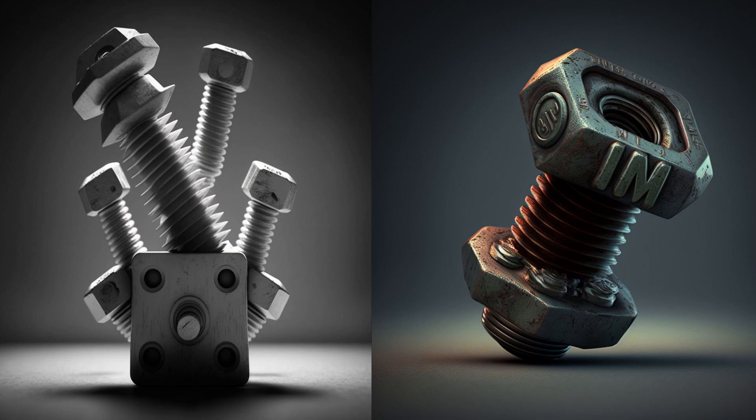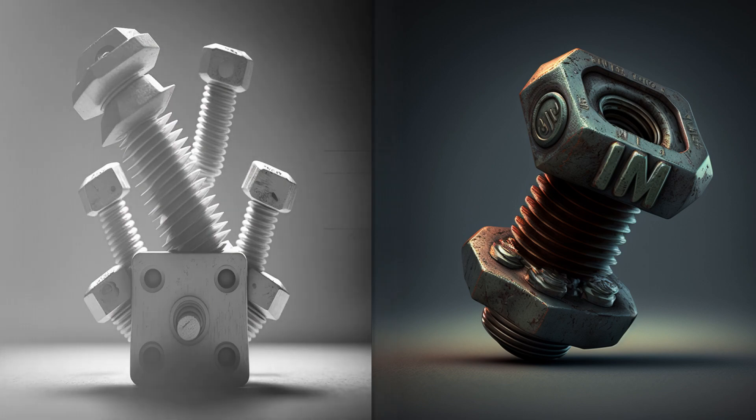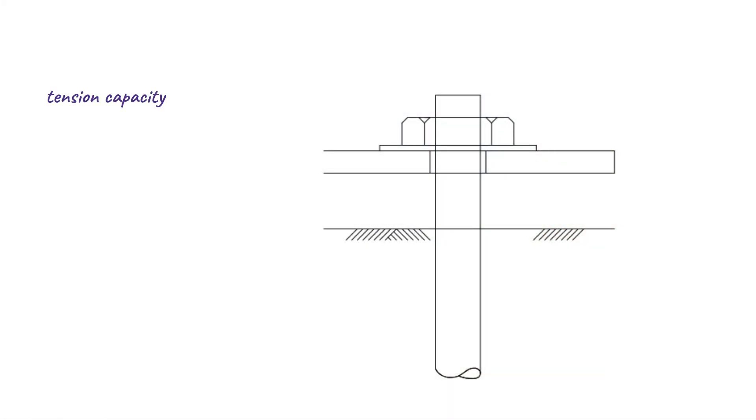In this tutorial, we will explore the crucial steps to calculate the tension capacity and pull-out resistance of these essential bolts. Before we begin, it's important to note that these calculations assume that there is no co-existent shear in the holding down bolts.